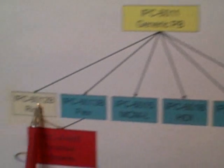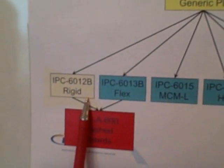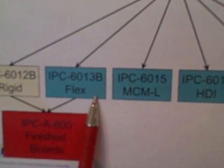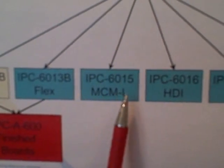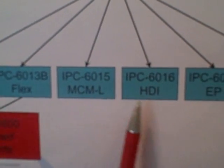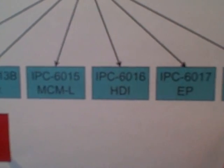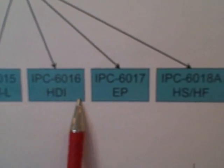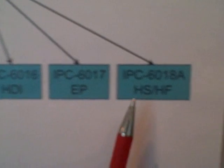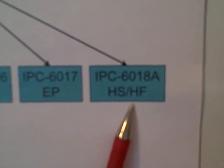Going down from this base generic document, we see there's 6012 for rigid, 6013 for flex, 6015 for multi-chip module, and so on and so forth for high-density interconnect, embedded passive components, and high-speed, high-frequency.